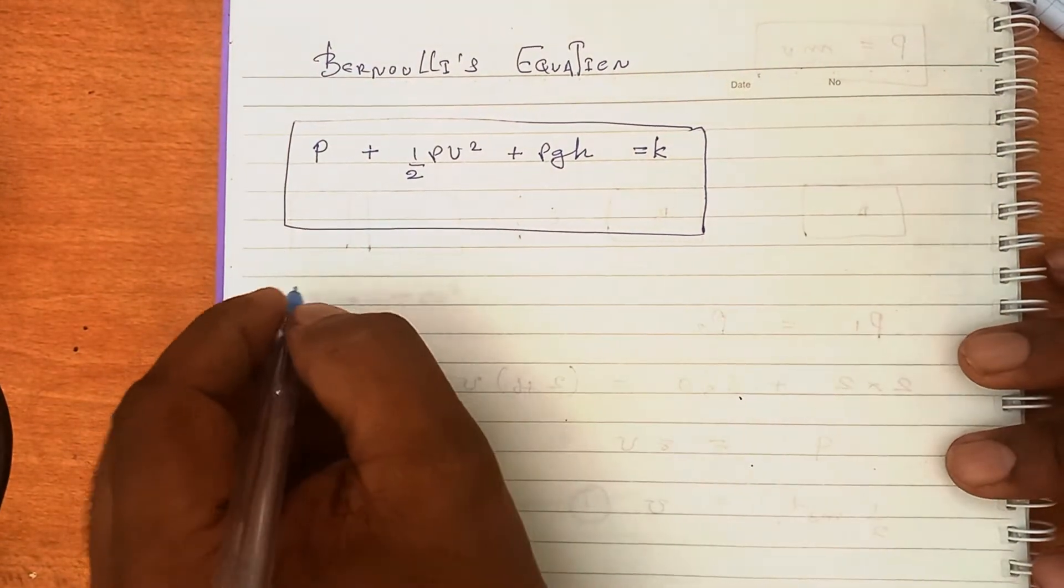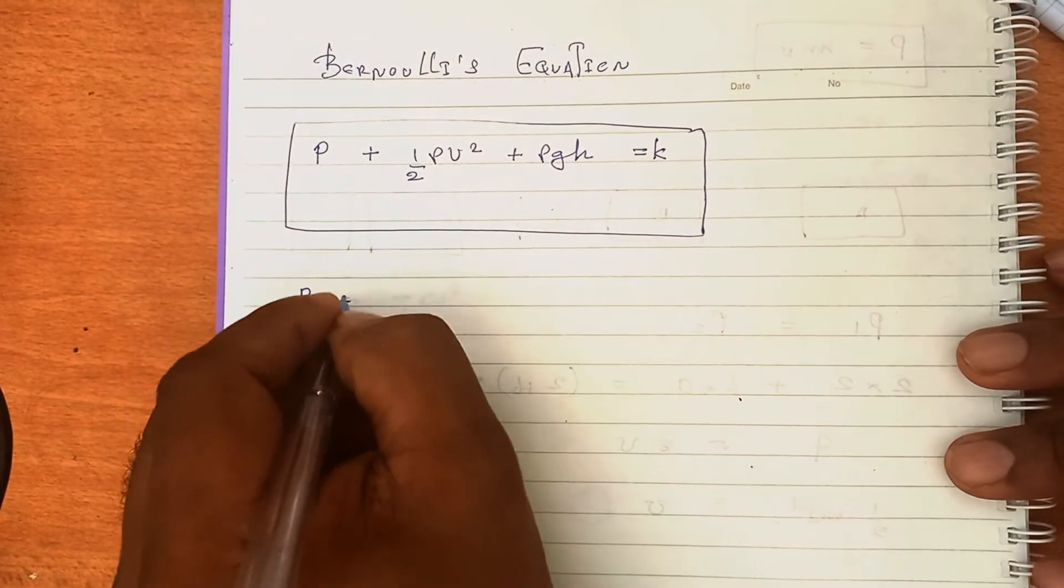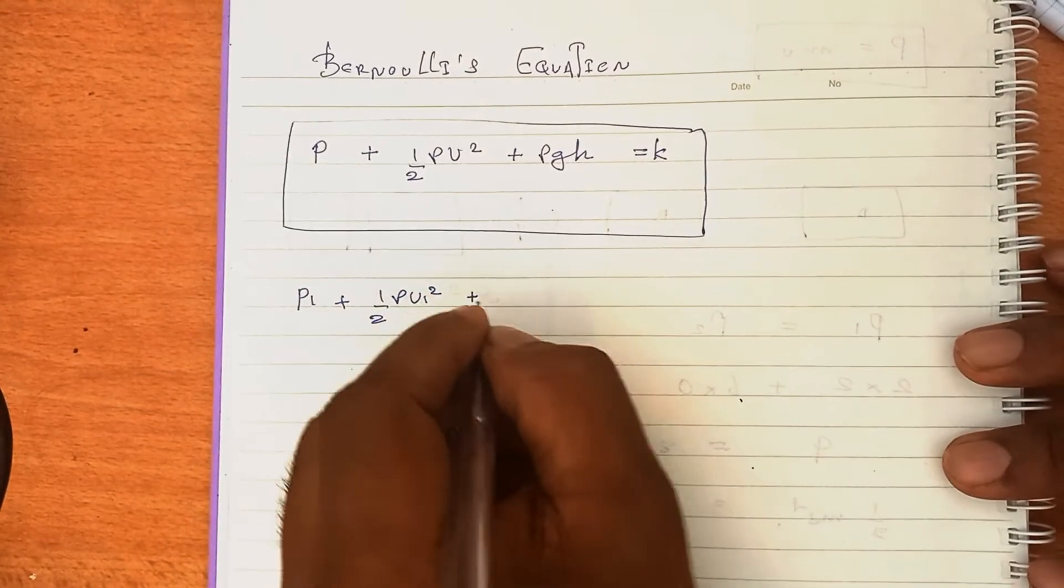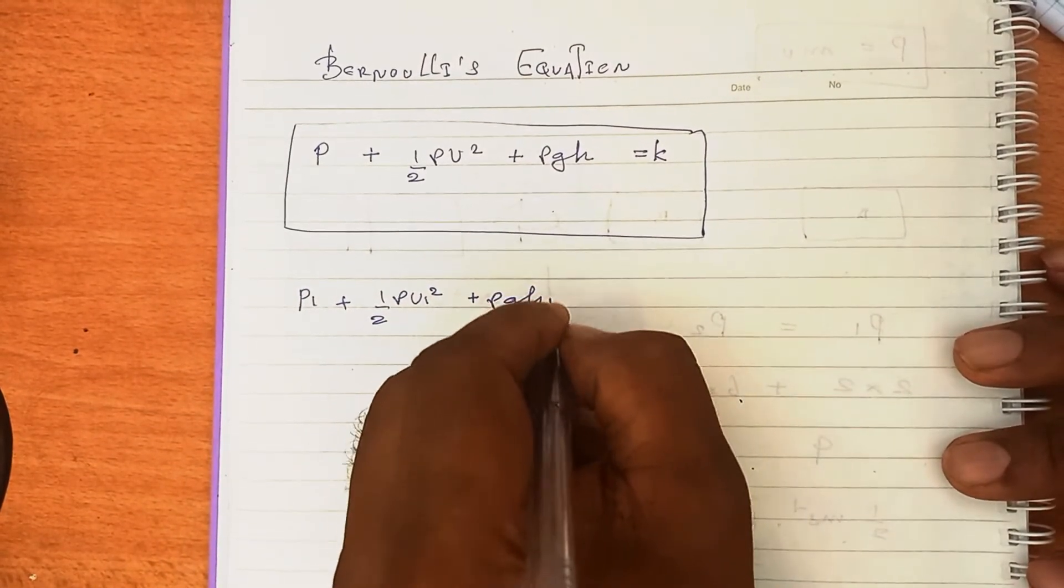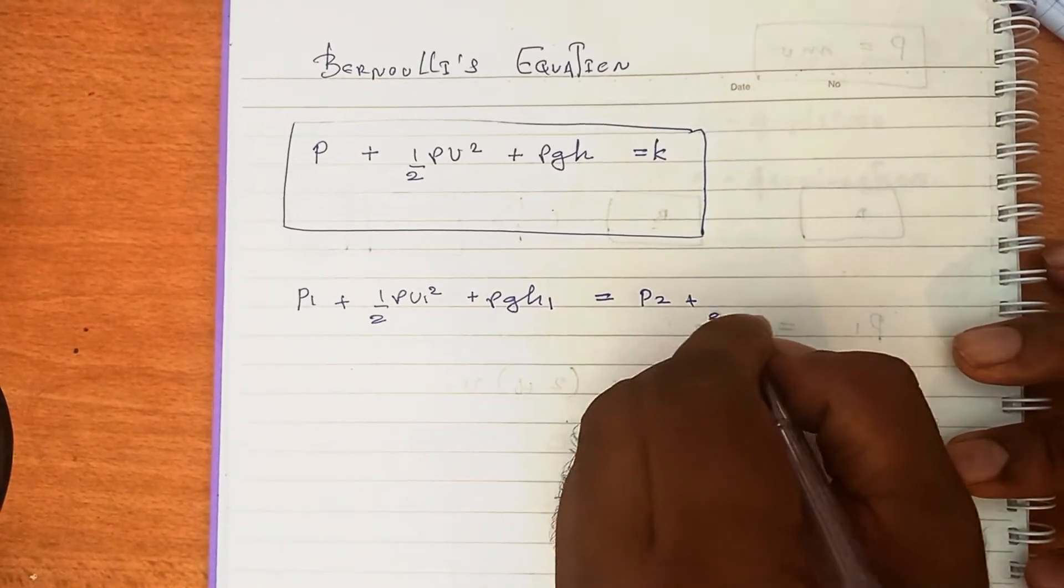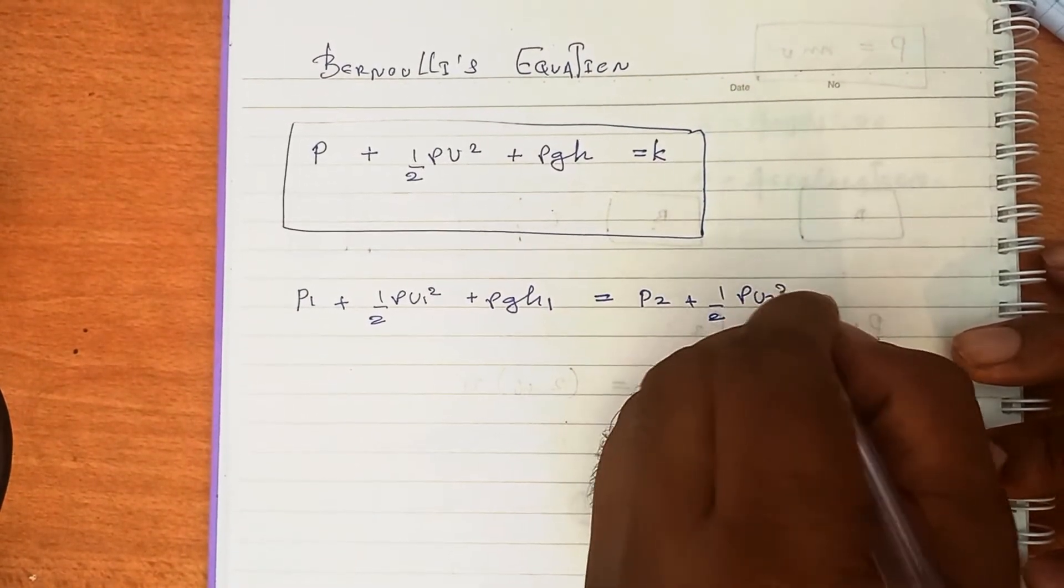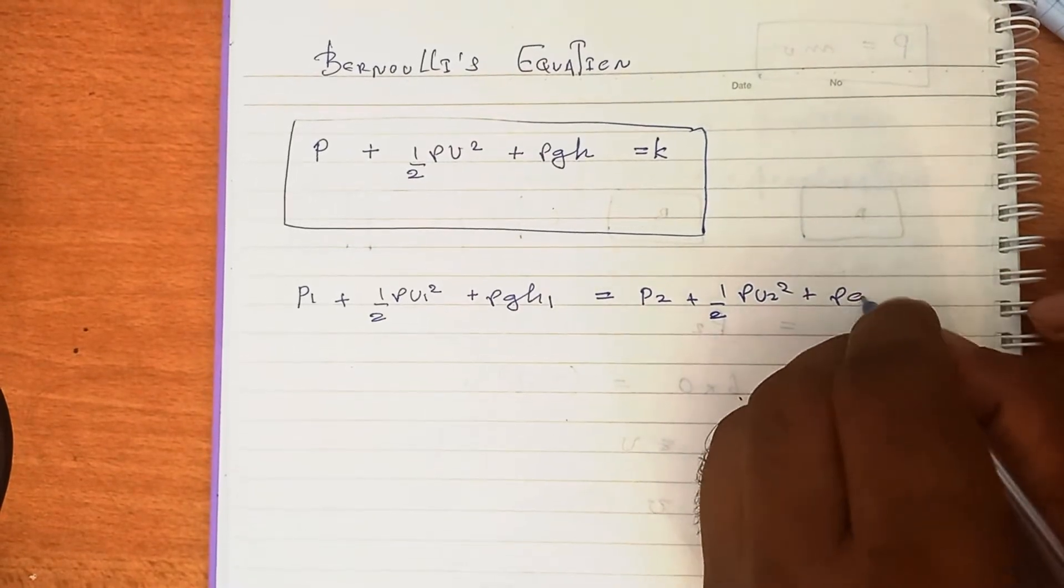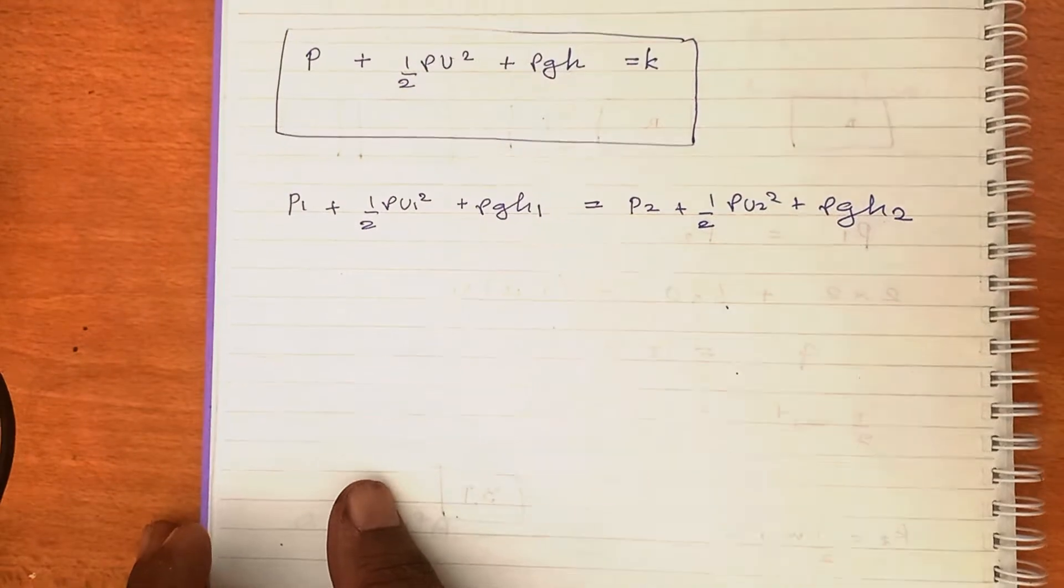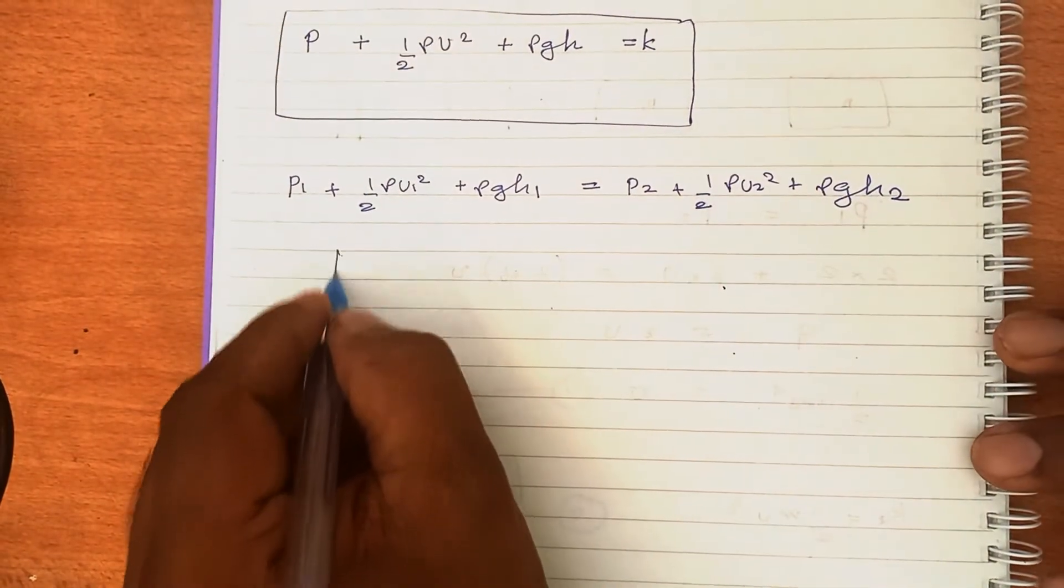According to Bernoulli's equation, it can be written P₁ + 1/2ρV₁² + ρgh₁ = P₂ + 1/2ρV₂² + ρgh₂. First of all, let's do this question.